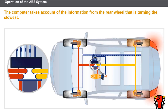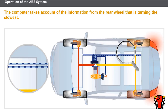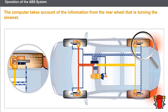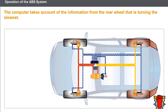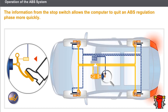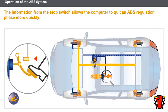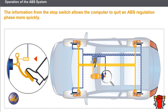The rear wheel solenoids are controlled simultaneously. The computer uses the electronic brake distributor logic to do this, taking account of the information from the rear wheel that is turning the slowest. This computer function is called Select Low. In addition to lighting the brake lights under braking, the stop switch sends a signal to the ABS computer, allowing it to determine the start of braking in order to anticipate braking regulation.